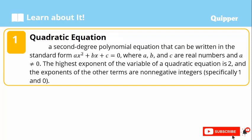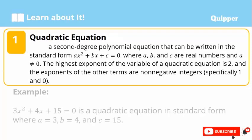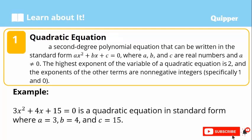Let's take for example 3x² plus 4x plus 15 equals 0. This is a quadratic equation in standard form where a is equal to 3, b is equal to 4, and c is equal to 15.